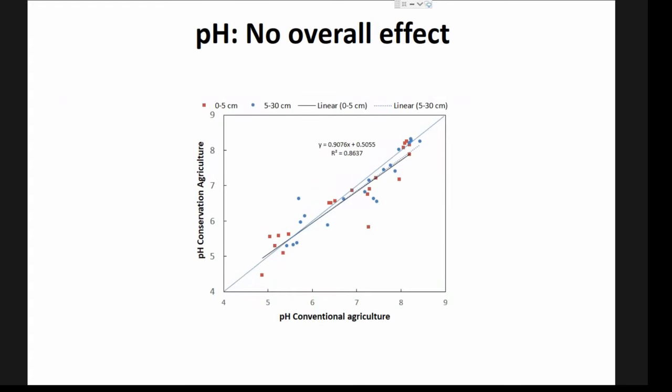Looking at soil pH in the platforms we measured — working in soils ranging from pH 5 to pH 8 — it's sometimes claimed that retaining more residues will acidify the soil. However, we don't really see a change in pH when we switch from conventional to conservation agriculture.